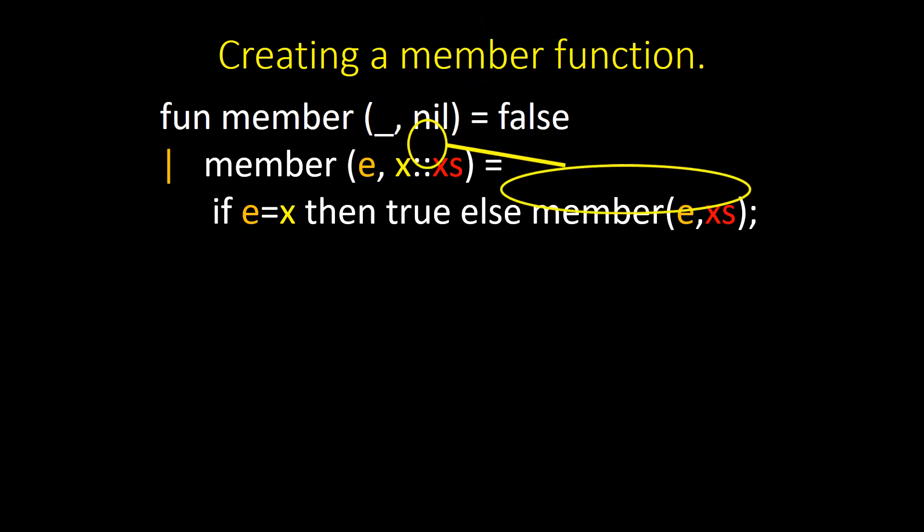If E is not the head of the list, then recursively look for it in the tail of the list. I called the tail XS.